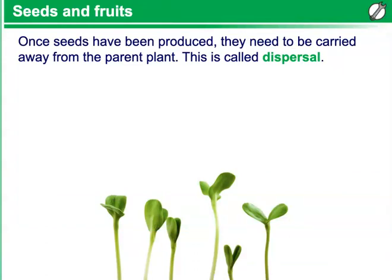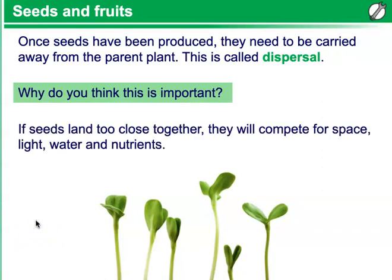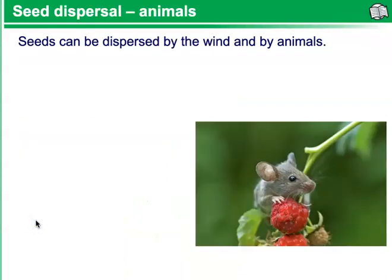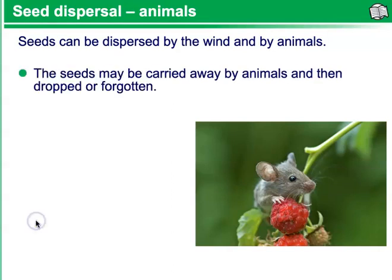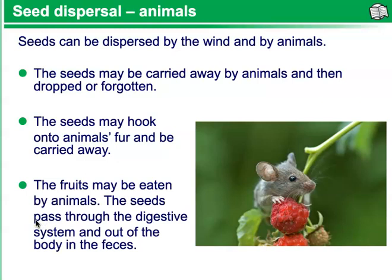Seeds and fruits. Once seeds have been produced, they need to be carried away from the parent plant — this is called dispersal. Why is dispersal important? If seeds land too close together, they will compete for space, light, water, and nutrients. Seeds can be dispersed by wind and also by animals. The seeds may be carried away by animals and then dropped or forgotten, or they may hook onto animals and be carried away. The fruits may be eaten by animals, and the seeds pass through the digestive system and out of the body in the feces.